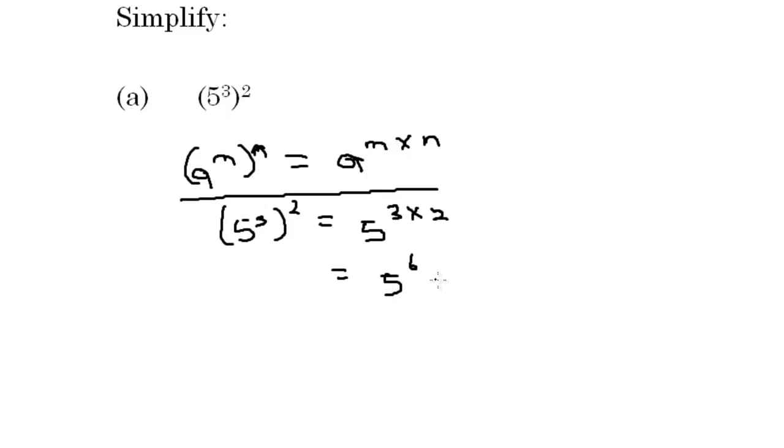We can leave it as 5 to the 6, or we can actually simplify it, that is find 5 to the 6 power. If we find 5 to the 6 power, that would give us 15,625. So either of these are acceptable for the answer.